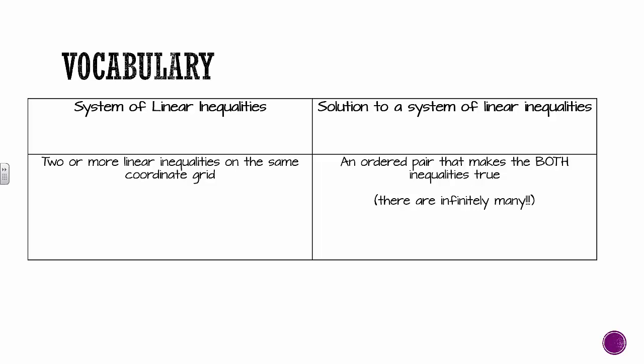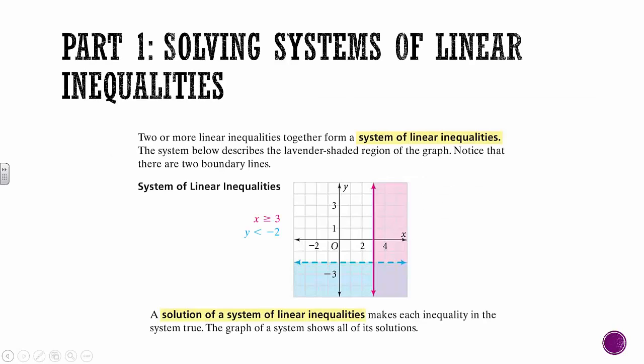That's why we graph them, so that we can see all of them. So two or more form a system. The system below describes the lavender shaded region of the graph. Notice that there's two boundary lines.